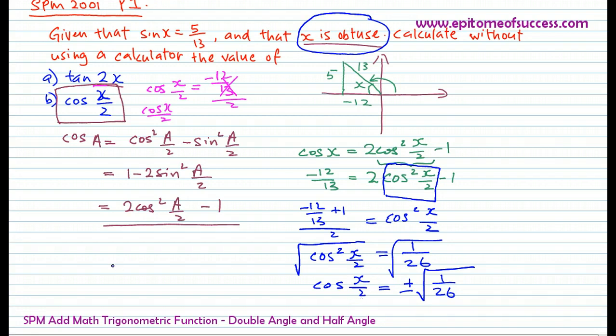It's x over 2, which means it is given that x is between 180 and 90 because that's in the second quadrant. However, this is x over 2. You've got to divide everything by 2. That means x over 2 would be between 45 and 90. Therefore, the value of x over 2 should be something that is in quadrant 1, and quadrant 1 is always positive.